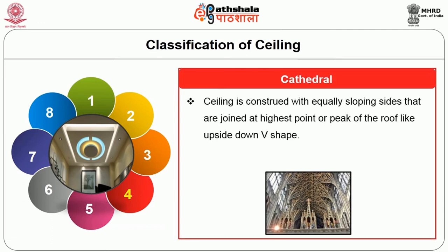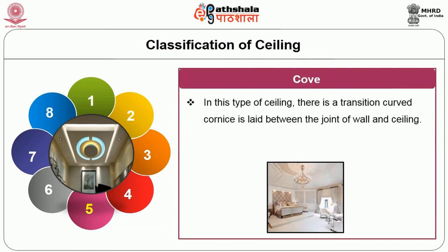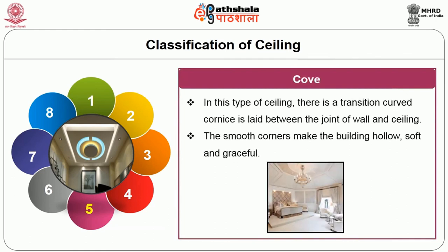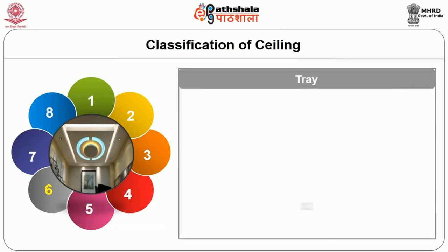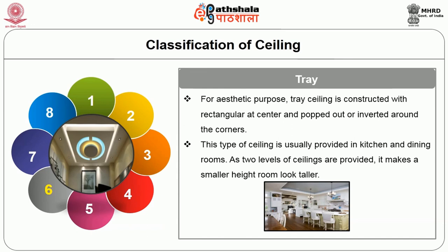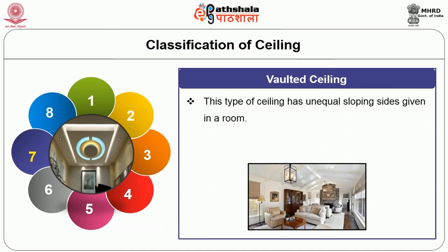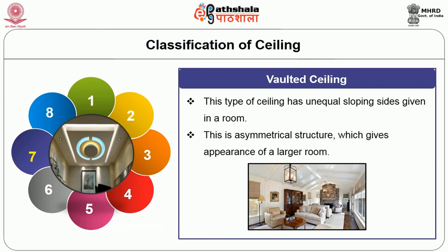Cathedral ceiling is constructed with equally sloping sides joined at the highest point or peak of the roof, like an upside-down V-shape. It creates a feeling of spaciousness, openness and ventilation; church ceilings are the best example. Cove ceiling has a transition of curved corners between the joint of wall and ceiling, making the building appear hollow, soft and graceful. Tray ceiling is constructed with a rectangular centre and elevated or inverted corners, usually provided in kitchens and dining rooms. Two levels of ceiling make a smaller room look taller. Vaulted ceiling has unequal sloping sides in a room, giving the appearance of a longer room.